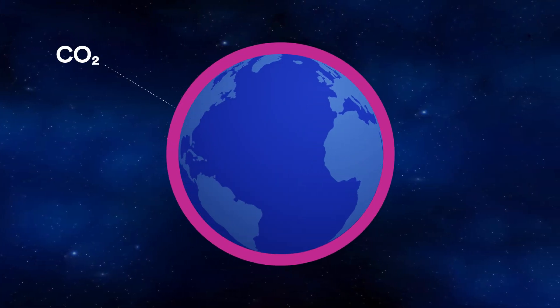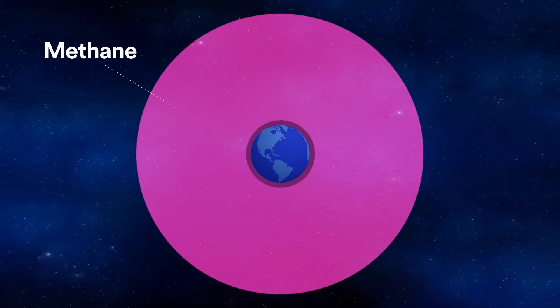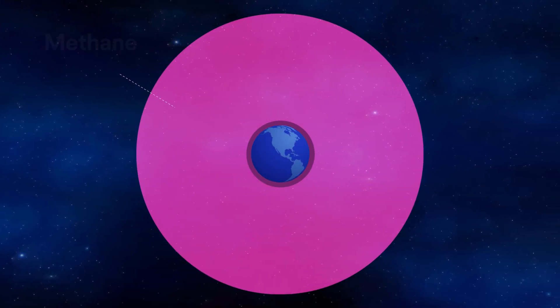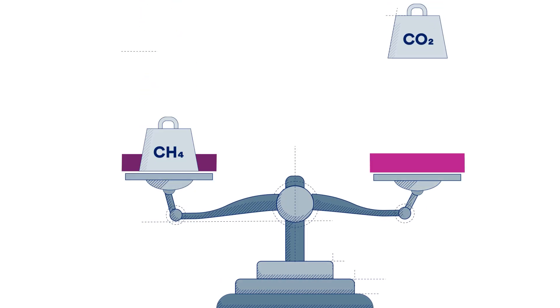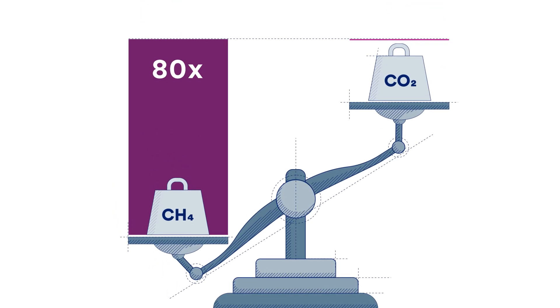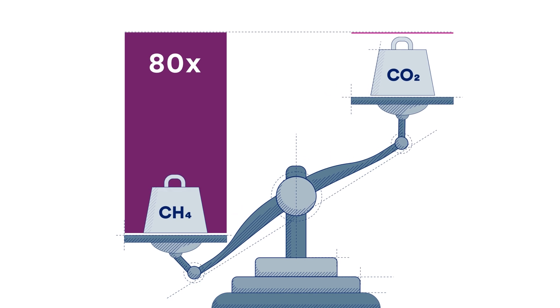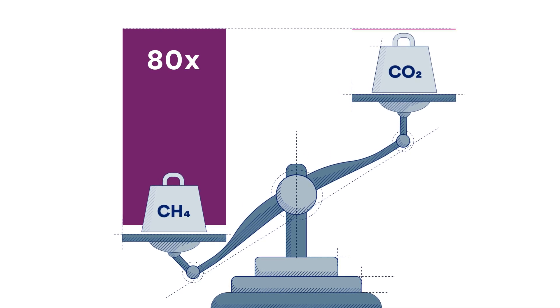Methane is super potent. It's making the earth hotter at an even faster rate than carbon emissions. For example, one kilogram of methane pollution warms the climate more than 80 times as much as one kilogram of carbon dioxide pollution when we look over the next 20 years.